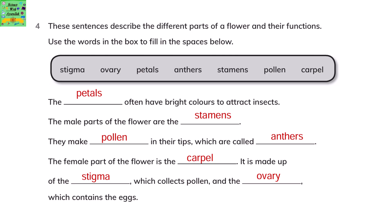The male parts of the flower are the stamens. They make pollen in their tips, which are called anthers. The female part of the flower is called the carpel. It is made up of the stigma, which collects pollen, and the ovary, which contains the eggs.